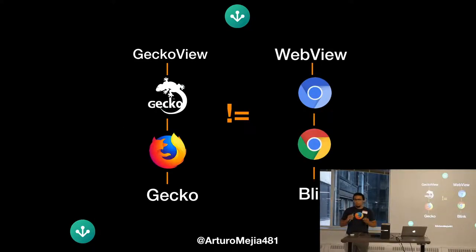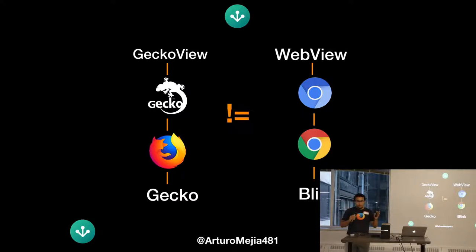You might be thinking this looks pretty similar to WebView, but it is not. First of all, GeckoView uses the Gecko engine, which is the same engine that Firefox uses, while WebView uses Blink — the same web engine that Chrome uses. Something pretty different about them is that they have quite different APIs. You cannot take a project that is using WebView and simply replace it with GeckoView.